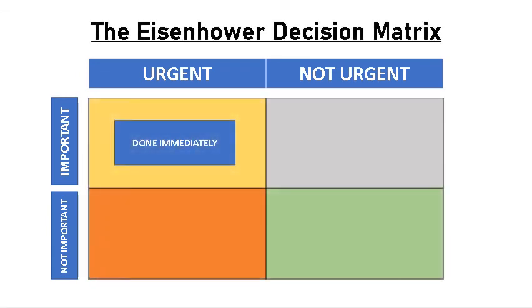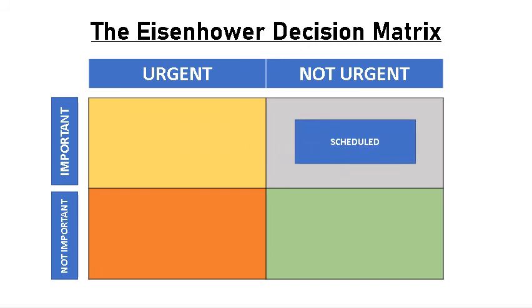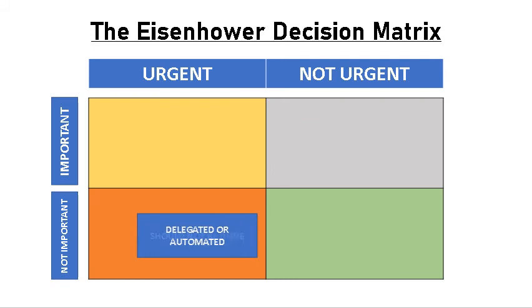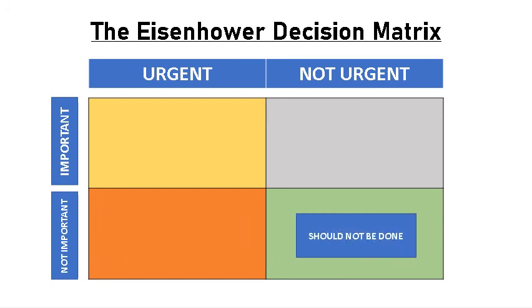In quadrant one, urgent and important tasks must be done immediately. In quadrant two, not urgent but important tasks can be scheduled on a calendar. In quadrant three, urgent but not important tasks should be delegated or automated, while in quadrant four, not urgent and unimportant tasks should not be done.